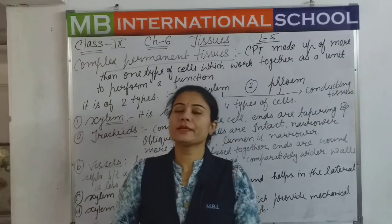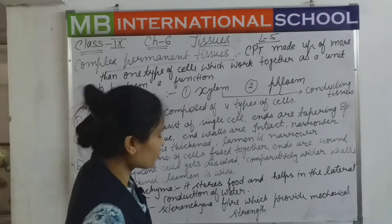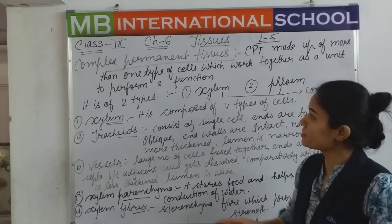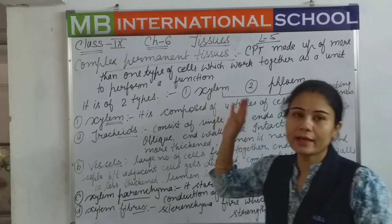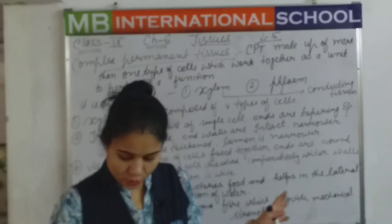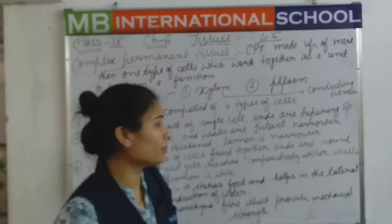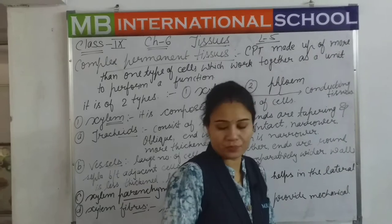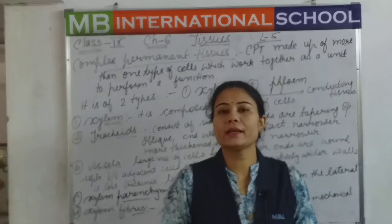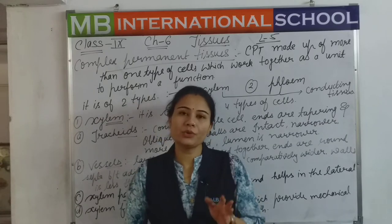Good morning students. We are here to talk about our next topic according to tissues. We have already discussed about tissues — the types we covered previously. We discussed simple tissues: parenchyma, collenchyma, and sclerenchyma. Those types have already been discussed.